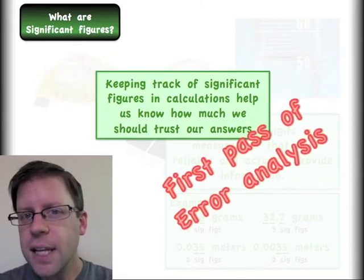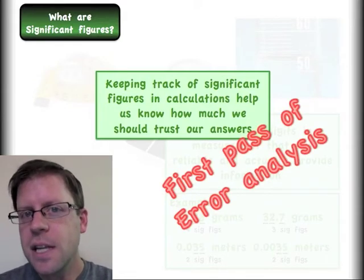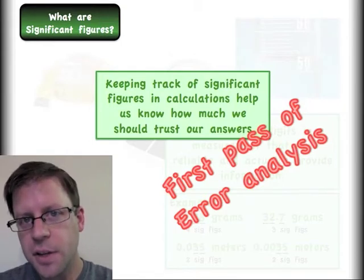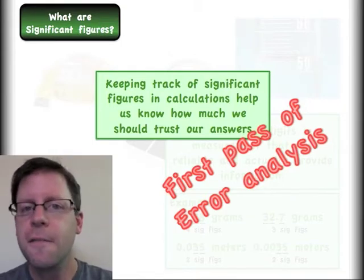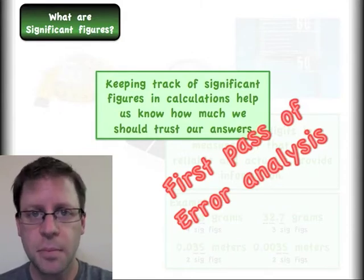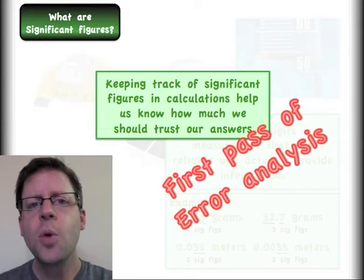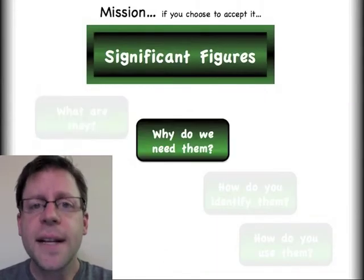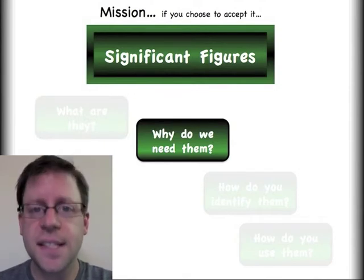But there's a take-home message. Keeping track of significant figures allows us to keep ourselves in check with how good our answers are when we take measurements. It's not really an error analysis, but what it does is it keeps us from getting ourselves into trouble. So this is something that you can do very quickly and very easily if you're taking measurements and running an experiment. And it will make sure that you're not overstating any of your numbers.